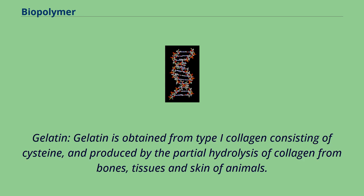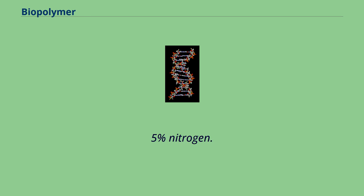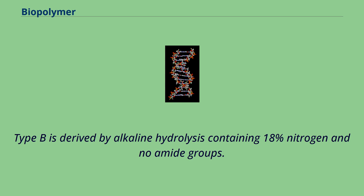Gelatin is obtained from type I collagen consisting of cysteine and produced by the partial hydrolysis of collagen from bones, tissues, and skin of animals. There are two types of gelatin: type A and type B. Type A collagen is derived by acid hydrolysis of collagen and has 18.5% nitrogen. Type B is derived by alkaline hydrolysis, containing 18% nitrogen and no amide groups.